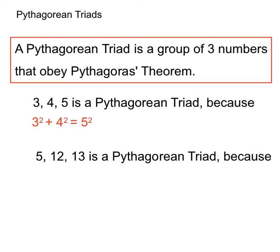Now, 5, 12, and 13 is another form of a Pythagorean triad because 5 squared plus 12 squared equals 13 squared. If you don't believe me, you can check on your calculator, but trust me, I'm a maths teacher.